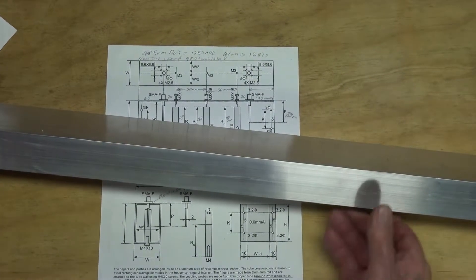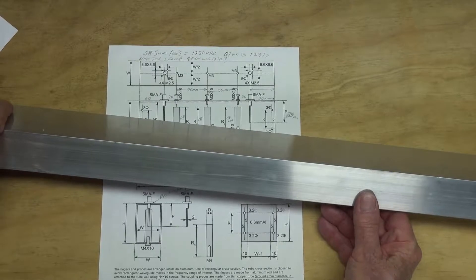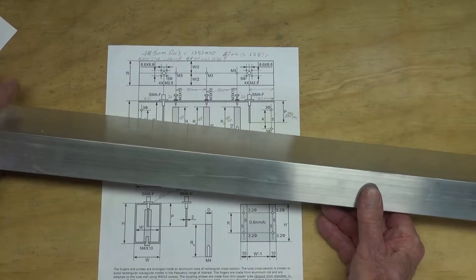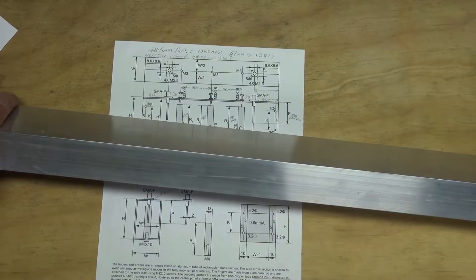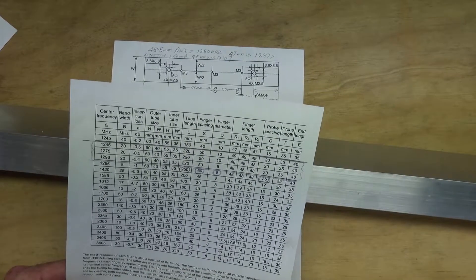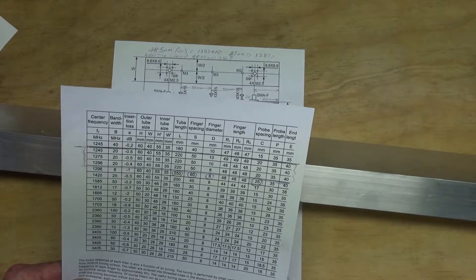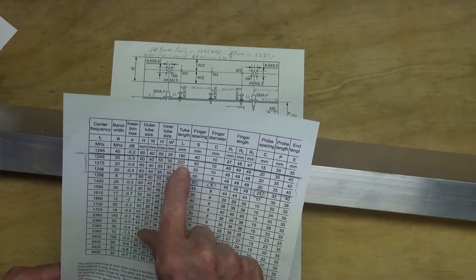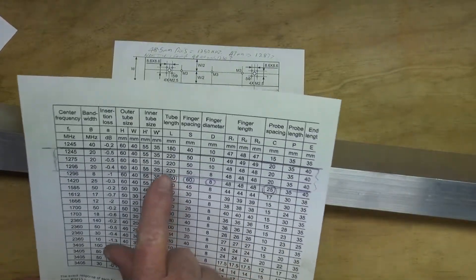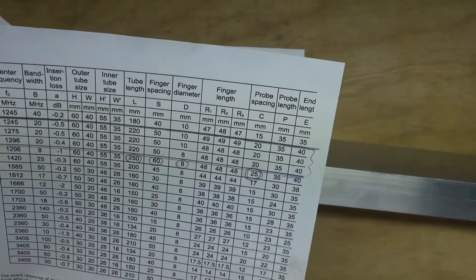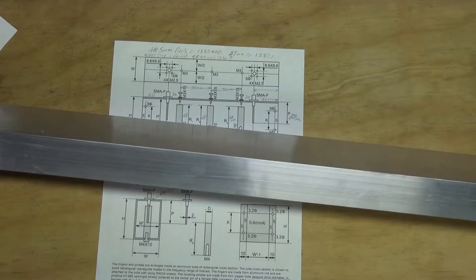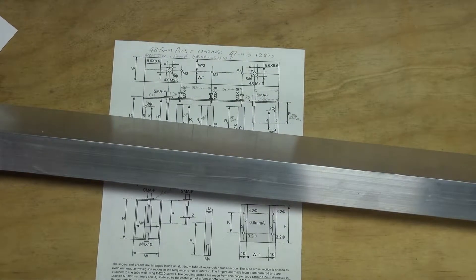The first step in building the filter is to cut the aluminium section to length. It's around about 3.5mm thick. There are two common lengths to use. The 20MHz bandwidth filter requires a length of 220mm, and the 8MHz one is 250mm. We'll put that into the vise and cut it off.